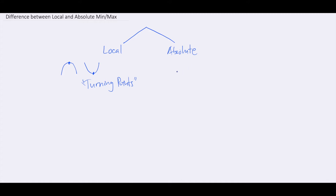What about an absolute minimum and maximum? Absolute maximum just means the highest point on the graph. It might be a maximum turning point, but at the same time, it can also be just one of the end points. For example, if I have a cubic graph, the local maximum would be this turning point right here, but the absolute maximum is this end point right here — because it is the highest point on your graph, higher than your local maximum.